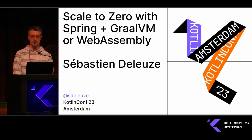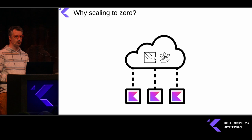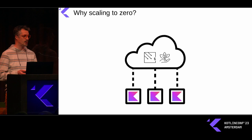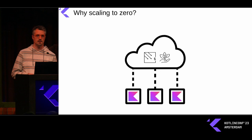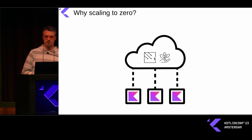Why scaling to zero? If you are building the next Netflix, if you are building websites that need high throughput, basically you don't really care — just using a bunch of JVM servers is fine. But if you are building other kinds of workloads that are not used all the time, you may want to reduce the cost of your cloud hosting or make it more sustainable. That's where scaling to zero makes sense.